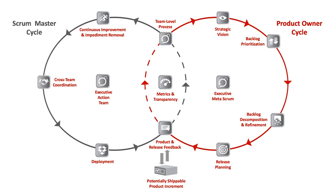This guide contains the definitions of the components that make up the Scrum at Scale framework, including its scaled roles, scaled events, and enterprise artifacts, as well as the rules that bind them together. Dr. Jeff Sutherland developed Scrum at Scale based on the fundamental principles behind Scrum, complex adaptive systems theory, game theory, and object-oriented technology. This guide was developed with the input of many experienced Scrum practitioners based on the result of their field work.